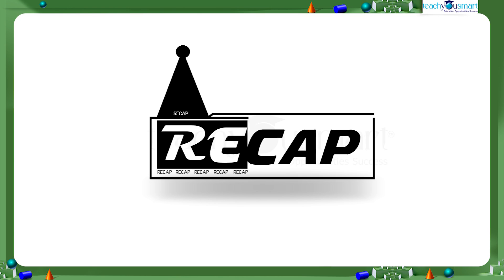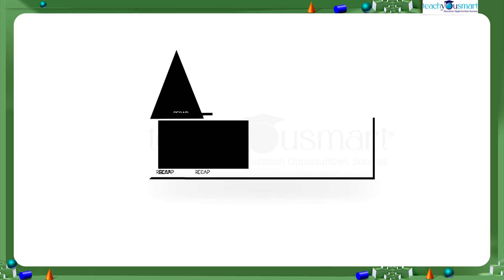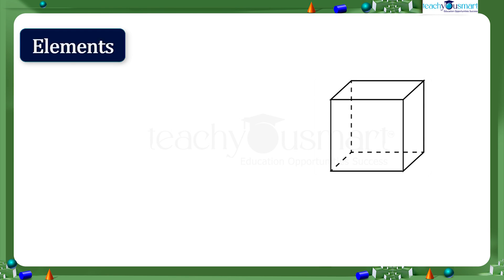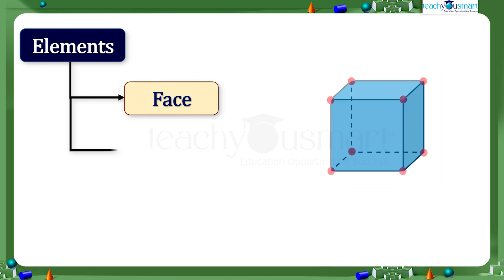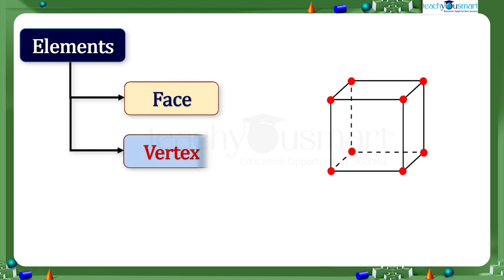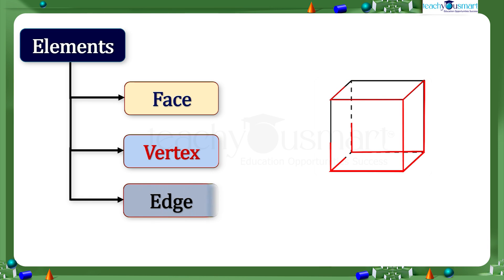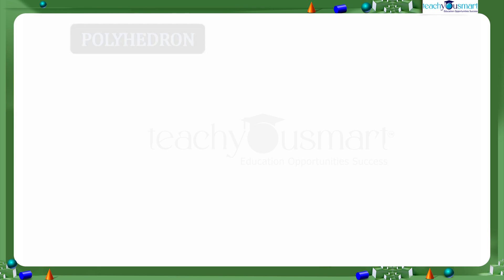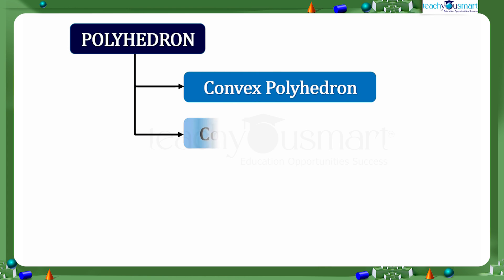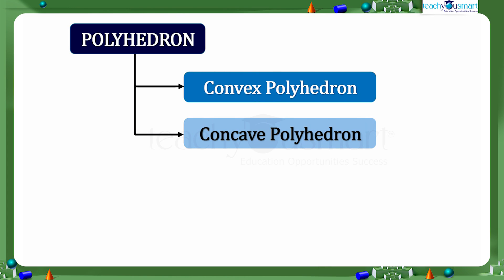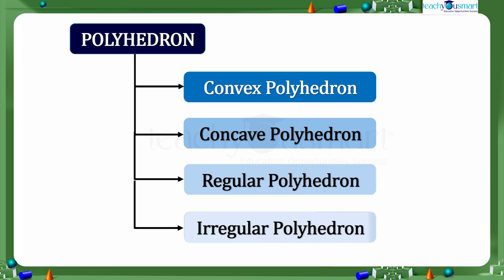Let's recall what we discussed today. We discussed the elements of a 3D shape: face, vertex, and edge. We also covered polyhedron, convex polyhedron and concave polyhedron, and regular polyhedron and irregular polyhedron.